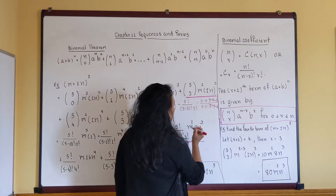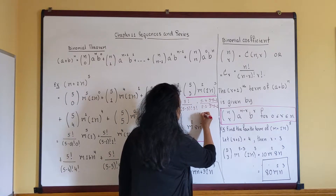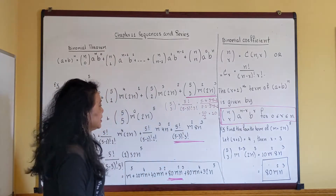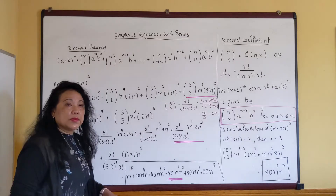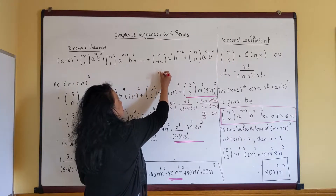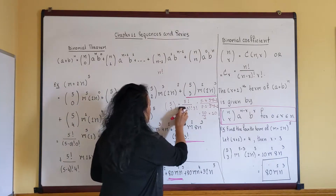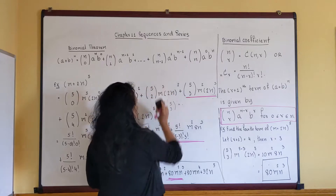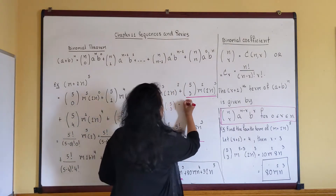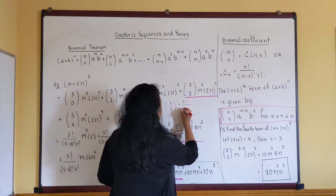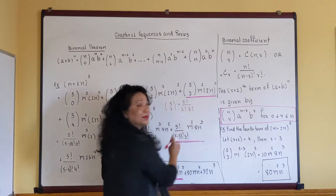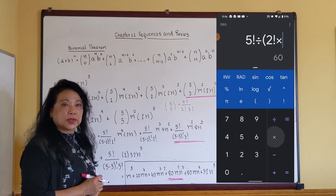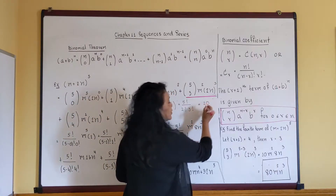After reducing, you get 20 divided by 2, which is 10 — the same answer. That's the second method. If you have the factorial function on your calculator, you can also punch in five factorial divided by two factorial times three factorial and get 10.